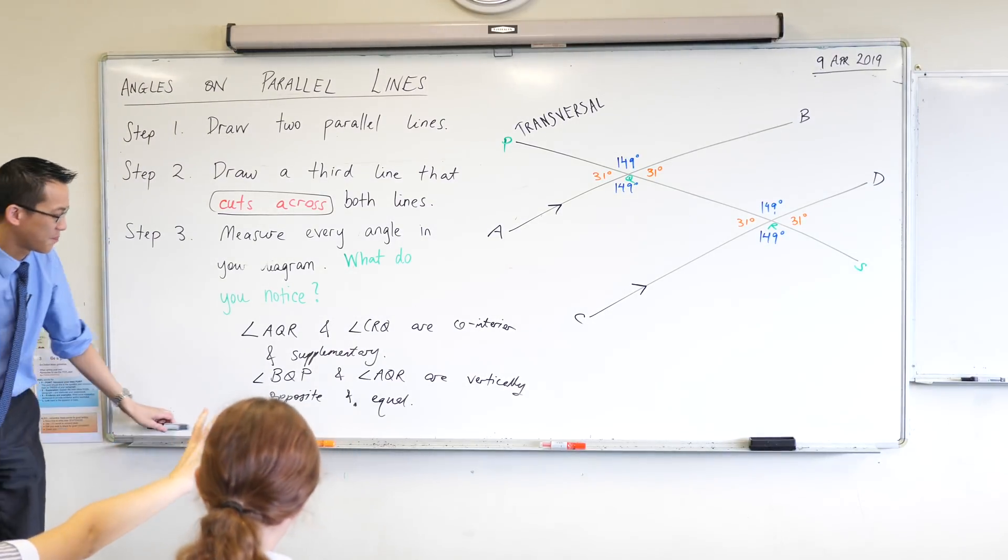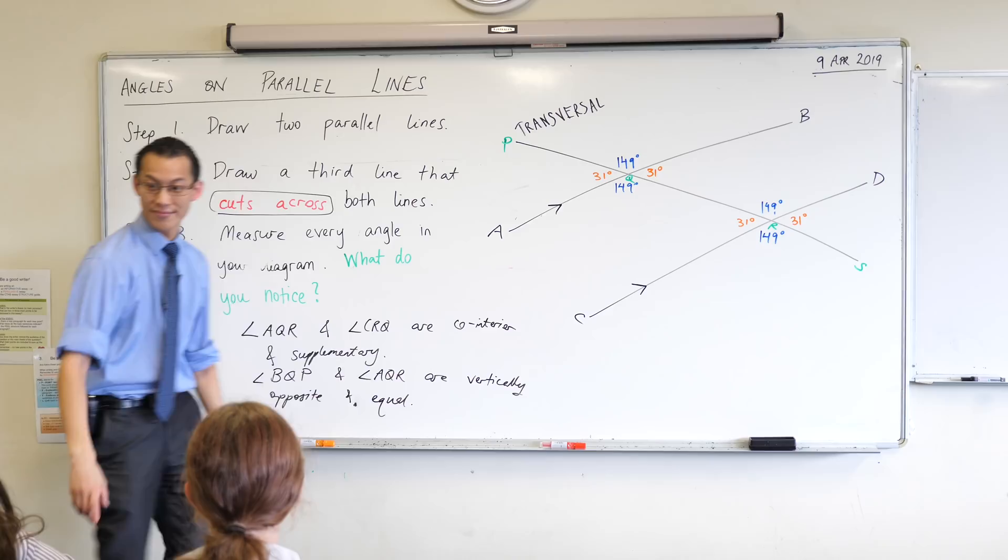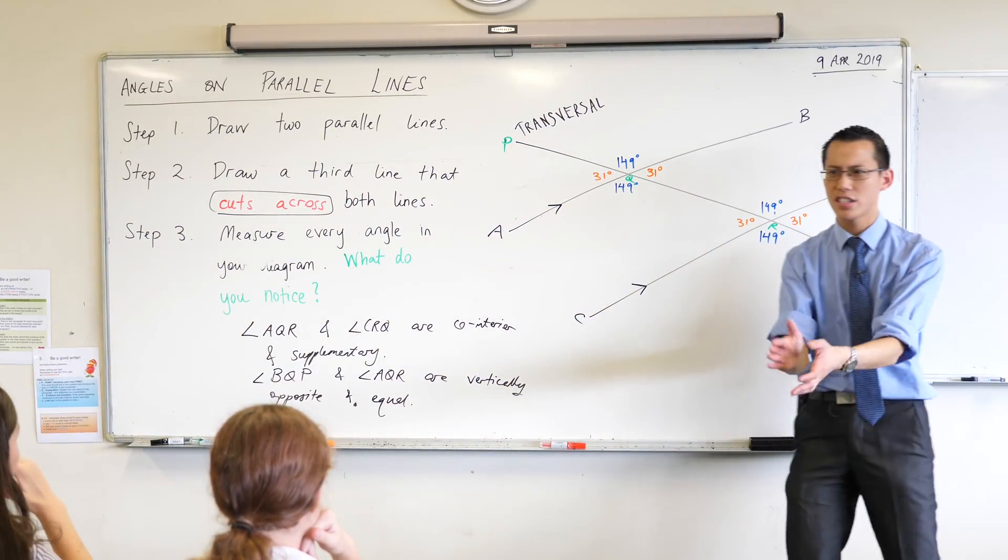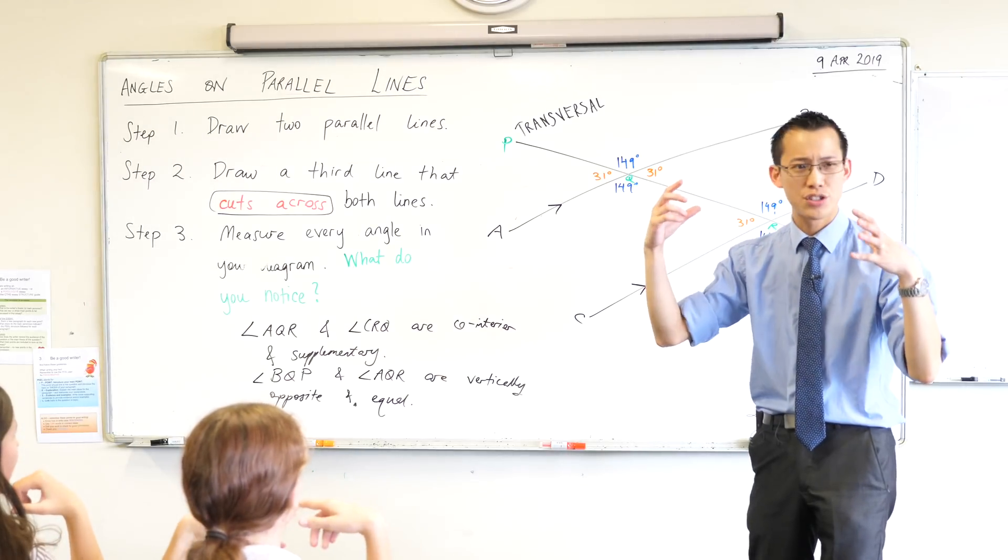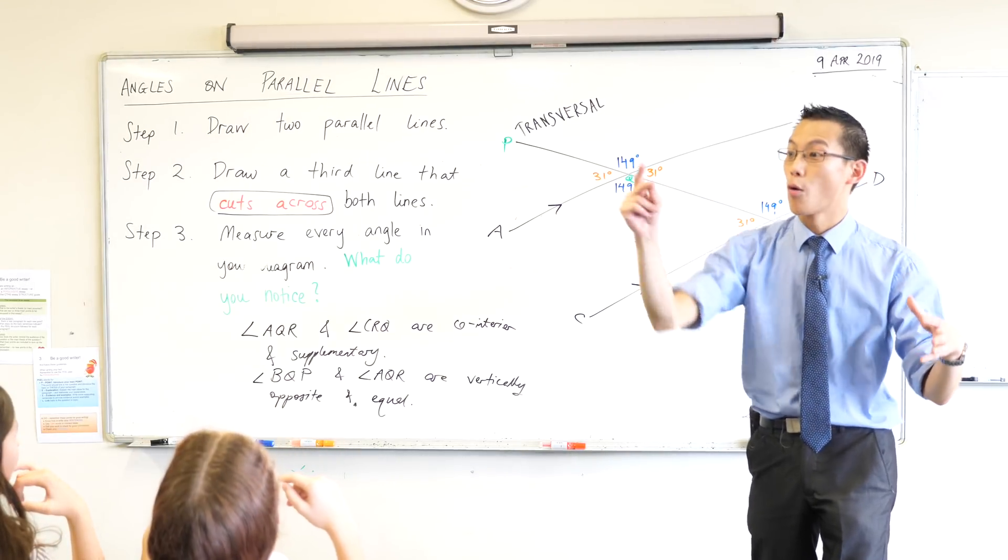Each set of four angles make 360 degrees. Okay, fantastic. So you can see 360 degrees. Think back to yesterday. What's the word we use to describe an angle of that size? Roshan? Revolution. A revolution. Very good.